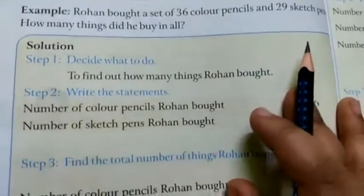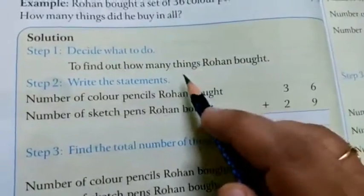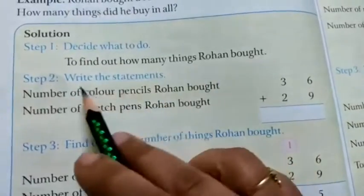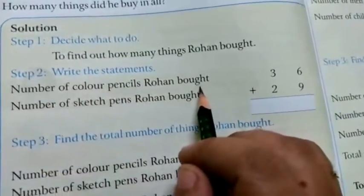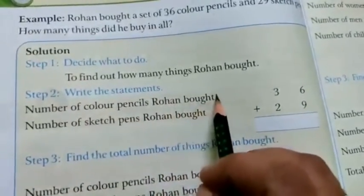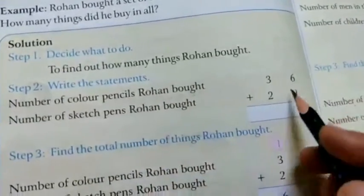So there are some steps. To find out how many things Rohan bought, you have to write the statements. For these statements you will get the marks. So, number of color pencils Rohan bought, number of sketch pens Rohan bought.